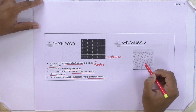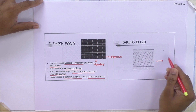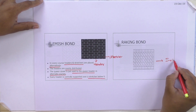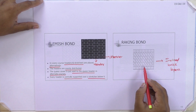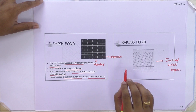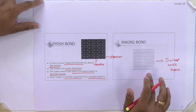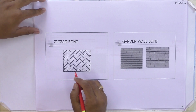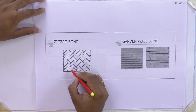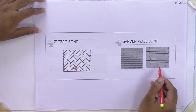Next one is raking bond — the brick layer has inclined or diagonal brick layers. In this type of brick layer we don't have significant vertical load. For external wall loads we use raking bond. Next is zigzag bond with a zigzag course of bricks, and then garden wall bond.